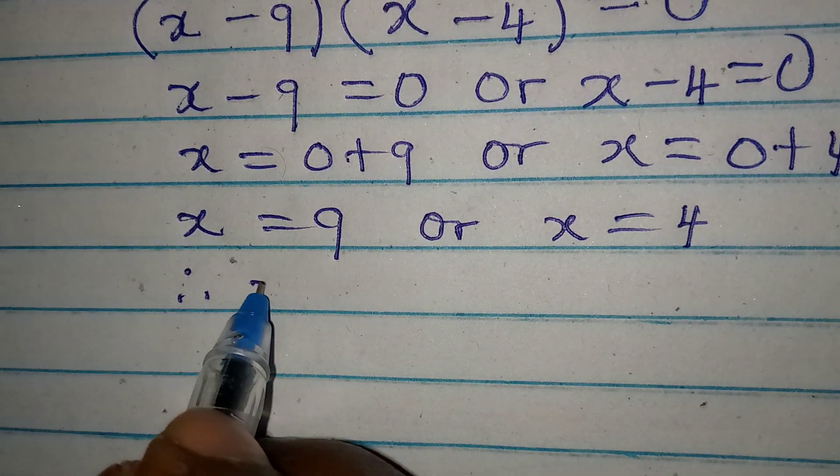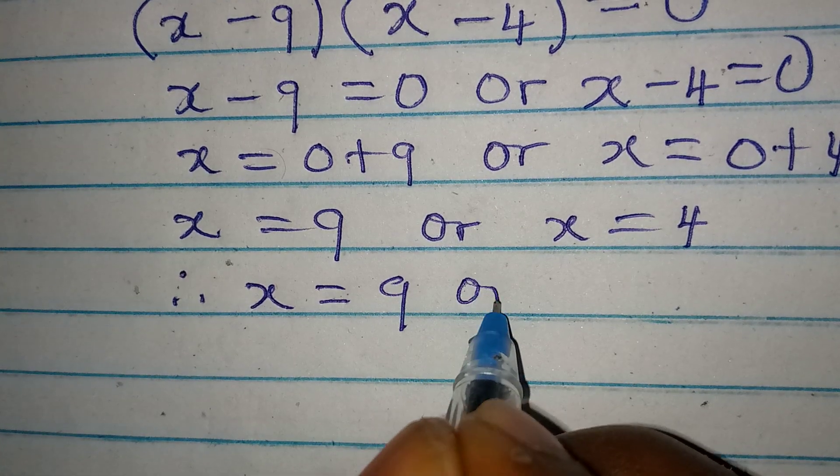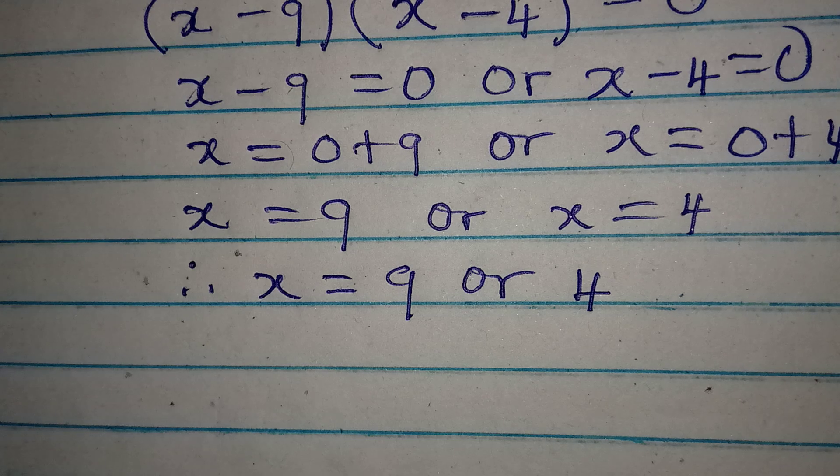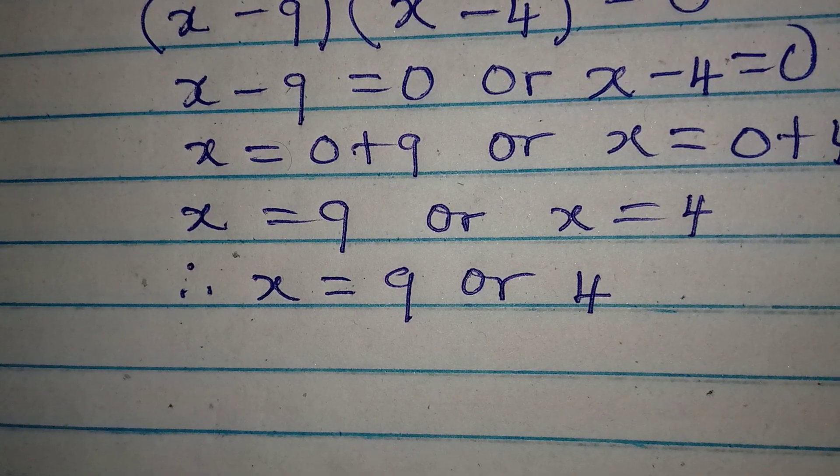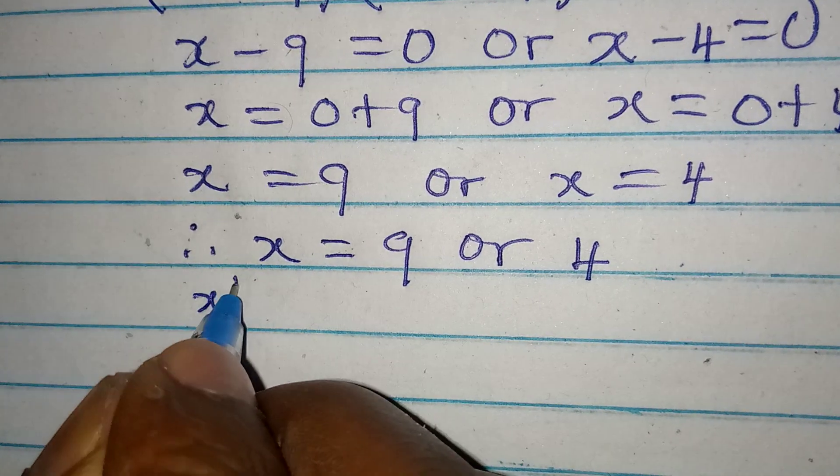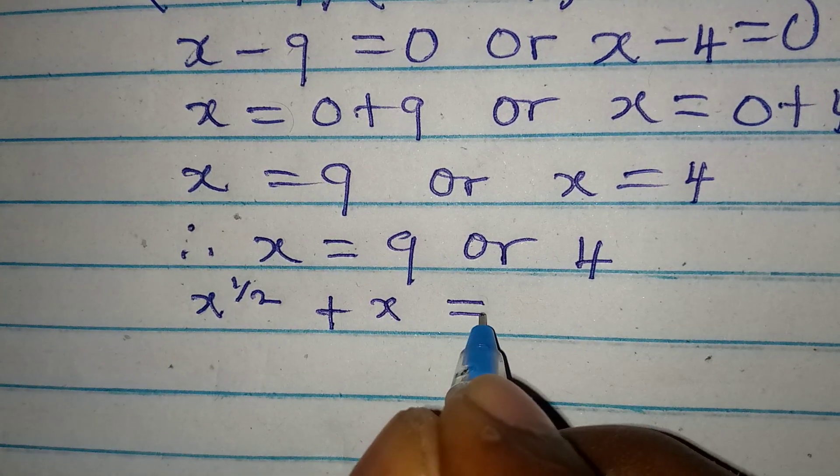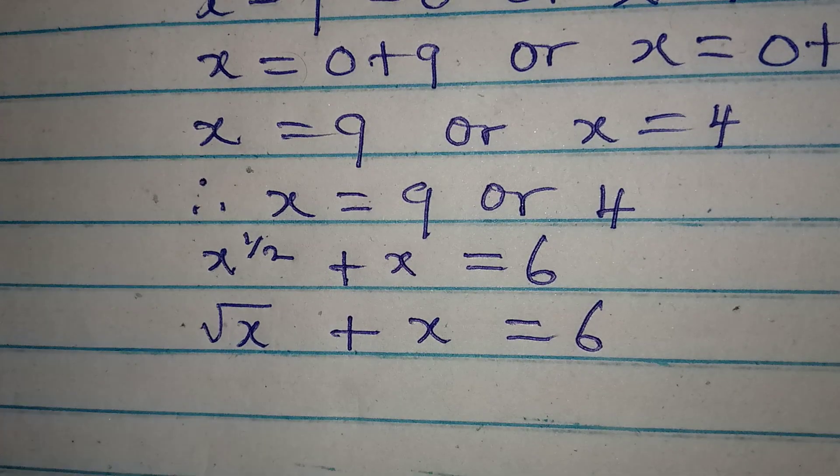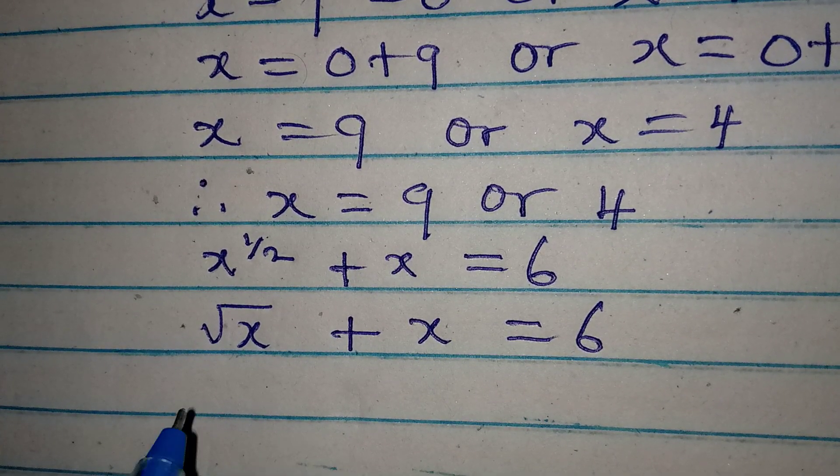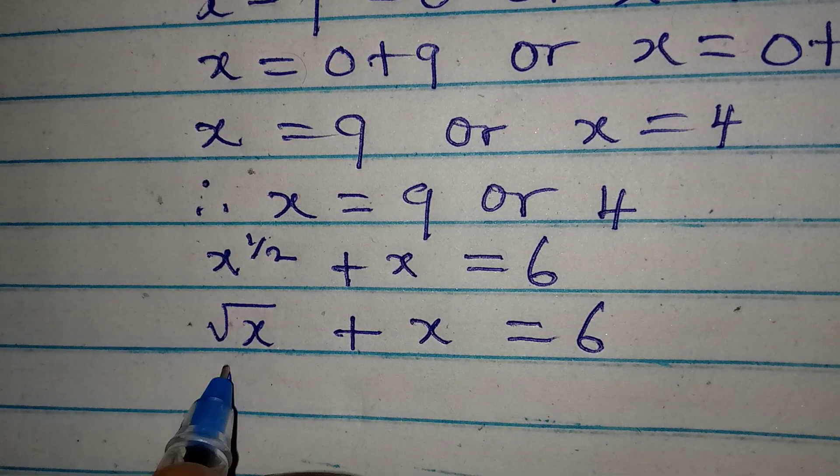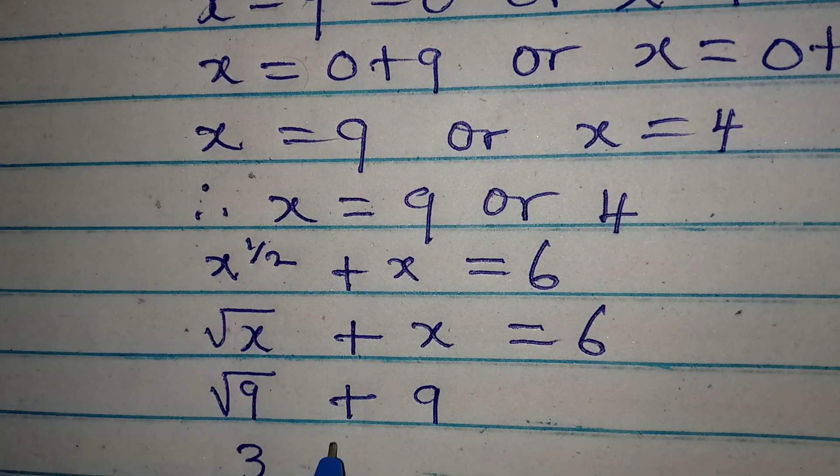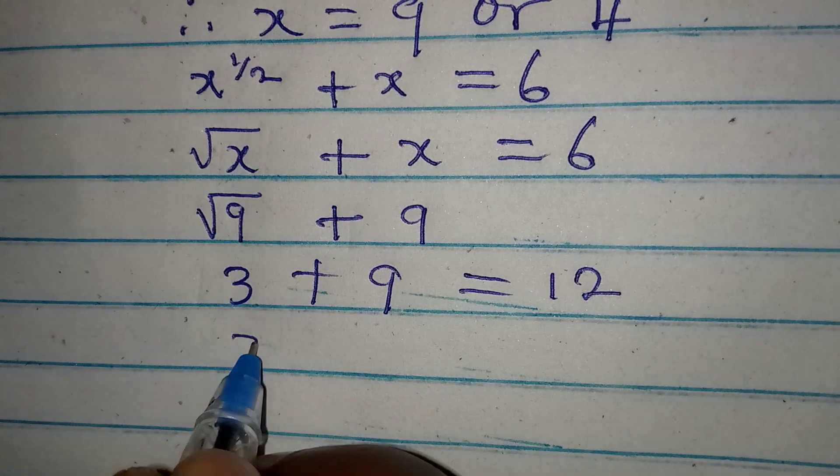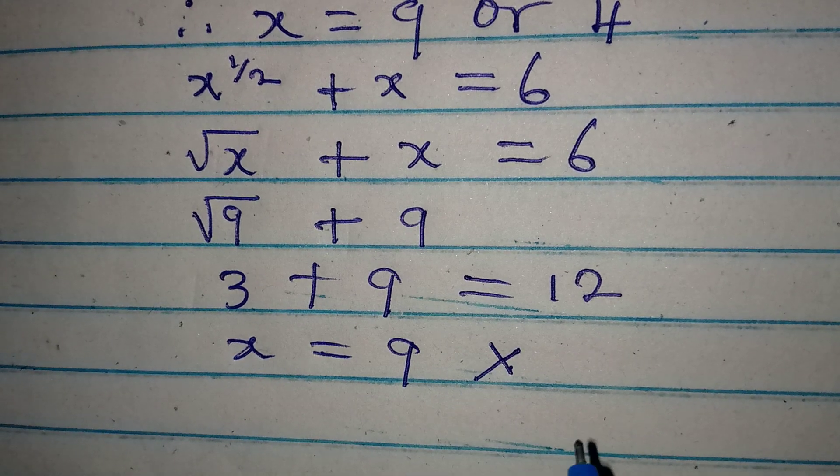Therefore, the values of x are 9 or 4. But both of them are positive and this means that the two of them cannot both satisfy the equation. The equation is x to the power of 1 over 2 plus x equal to 6, which means square root of x plus x should equal 6. Let's put in 9. Square root of 9 plus 9, that's 3 plus 9, which is giving us 12. This means that x equals 9 is not satisfying.